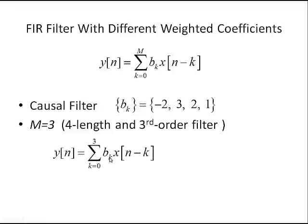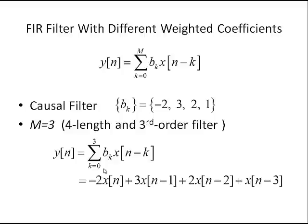Starting off with this generalized difference equation, where k goes from 0 to m equal to 3, we can form our filter based on this example. When k equals 0, the weight of the present input is equal to negative 2. When k equals 1, it has a filter coefficient of 3. When k equals 2, we have a weight of 2. And when k equals 3, we have a weight of 1. So these weights — negative 2, 3, 2, and 1 — are our filter coefficients for how we weight the present and past values.